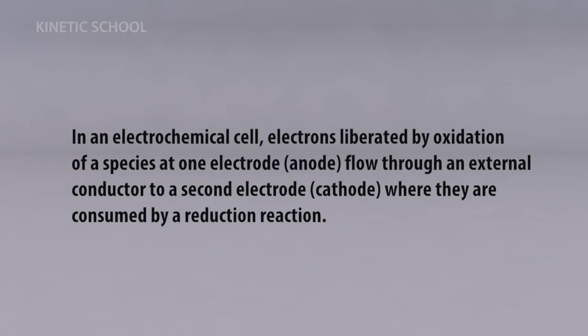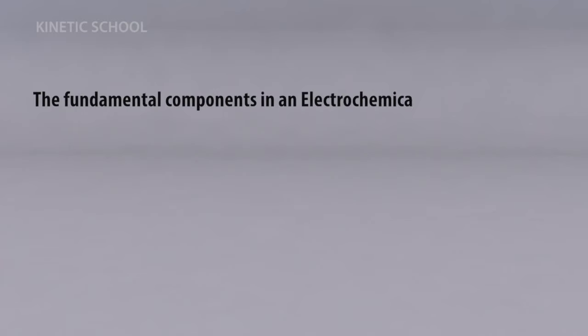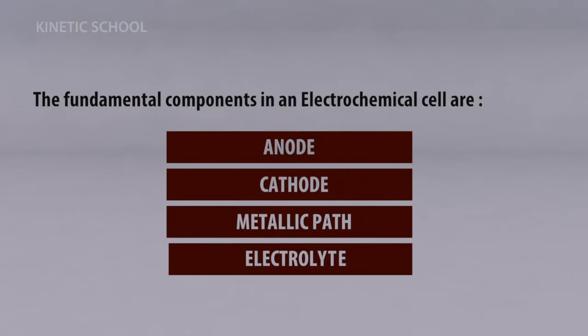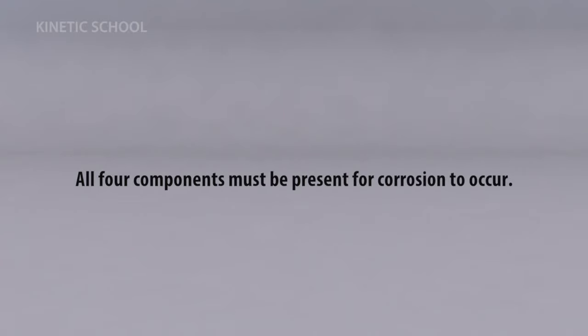The fundamental components in an electrochemical cell are anode, cathode, metallic path, and electrolyte. All four components must be present for corrosion to occur.